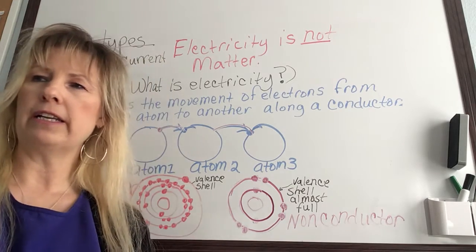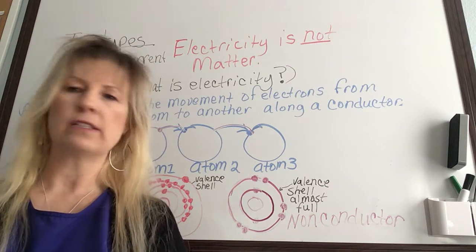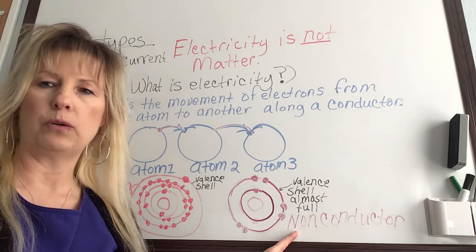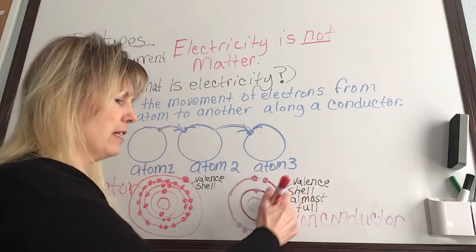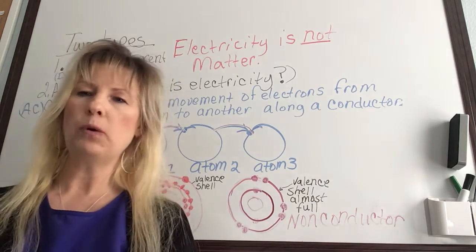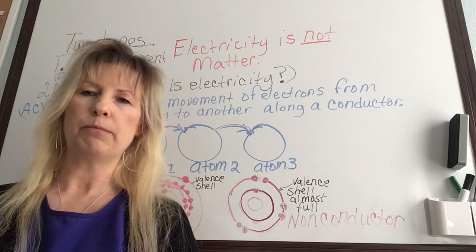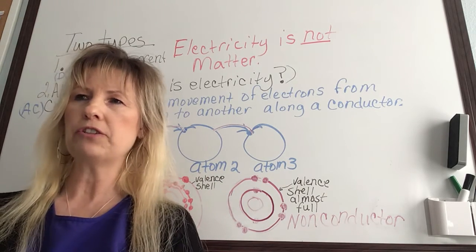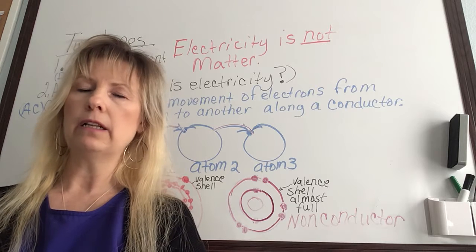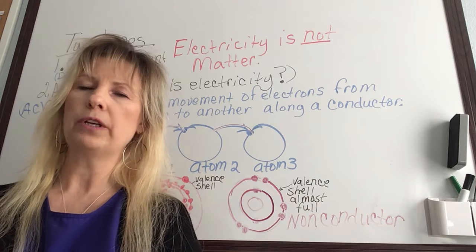A non-conductor is known as an insulator, and it is a material that does not easily transmit electricity. Here I put a non-conductor or insulator, and if you notice, this valence shell — the outer shell — is almost full of electrons. When they have five or more, it's a very good insulator and will not transmit electricity, because there's not much room to add more electrons. Really good non-conductors include rubber, silk, wood, glass, cement, and ceramic — those are all really good insulators.